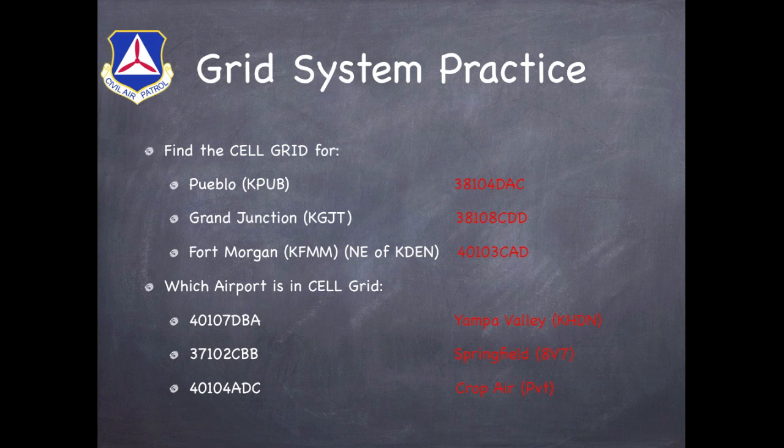And now that we're back, the grids you should have landed on for Pueblo would be 38104 Delta Alpha Charlie. For Grand Junction, 38108 Charlie Delta Delta. And for Fort Morgan, 40103 Charlie Alpha Delta. Also, the three airports you should have found would have been Yampa Valley, Springfield, and Crop Air. Crop Air is actually a private airport just north of the Denver area.